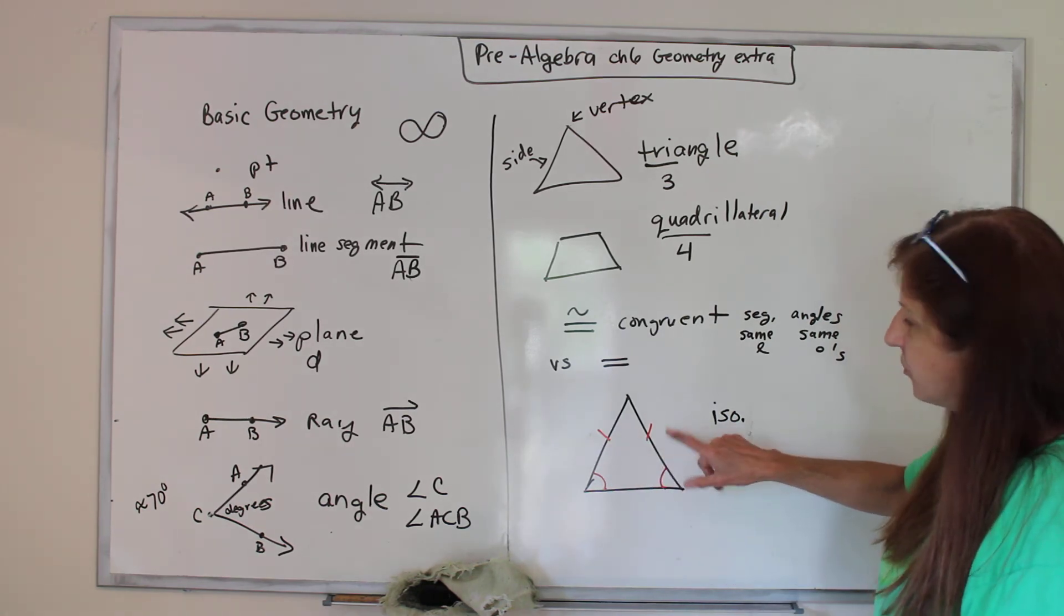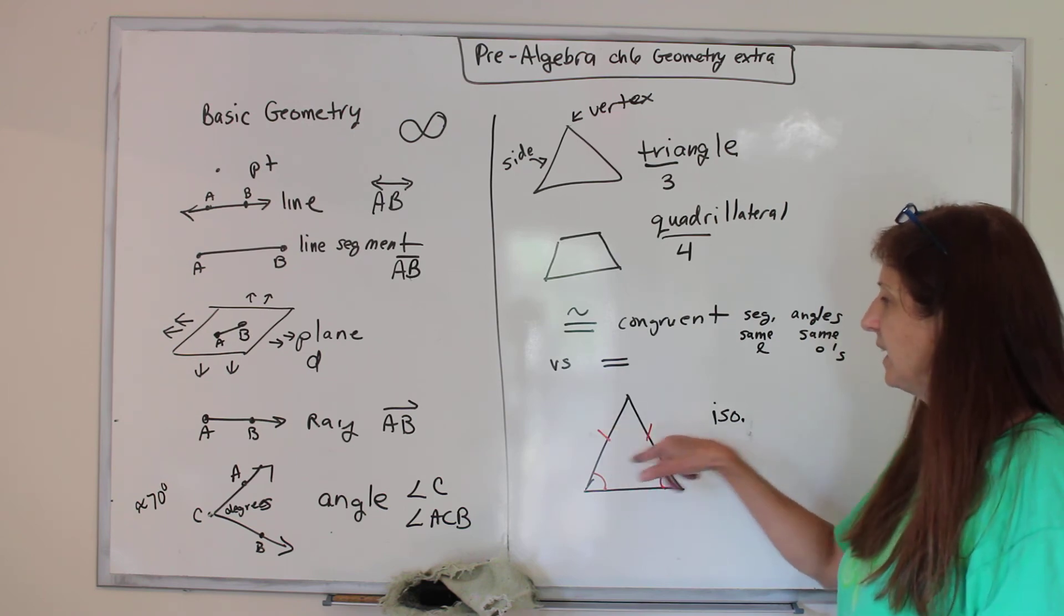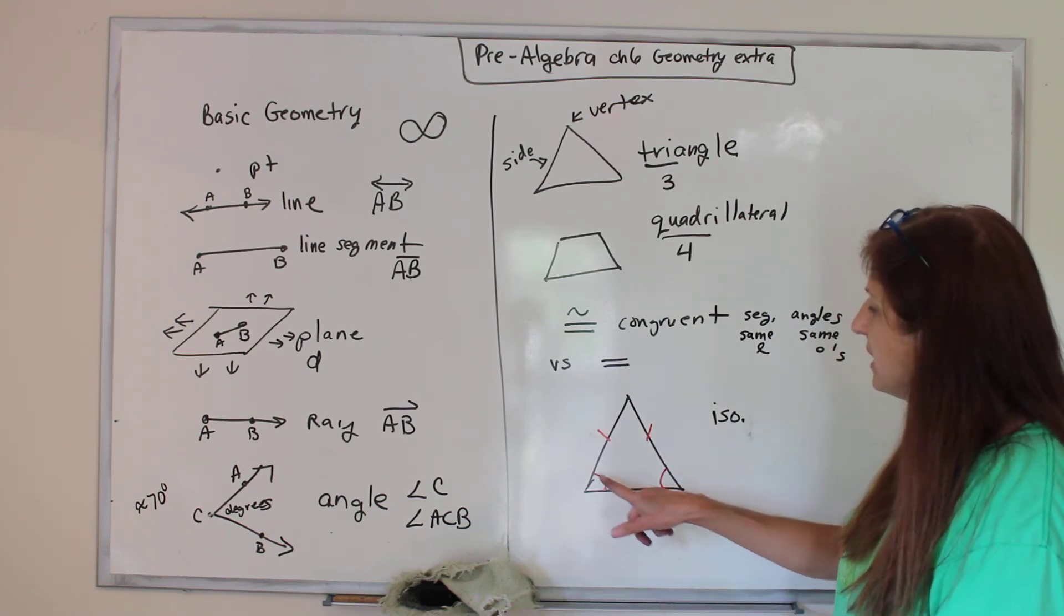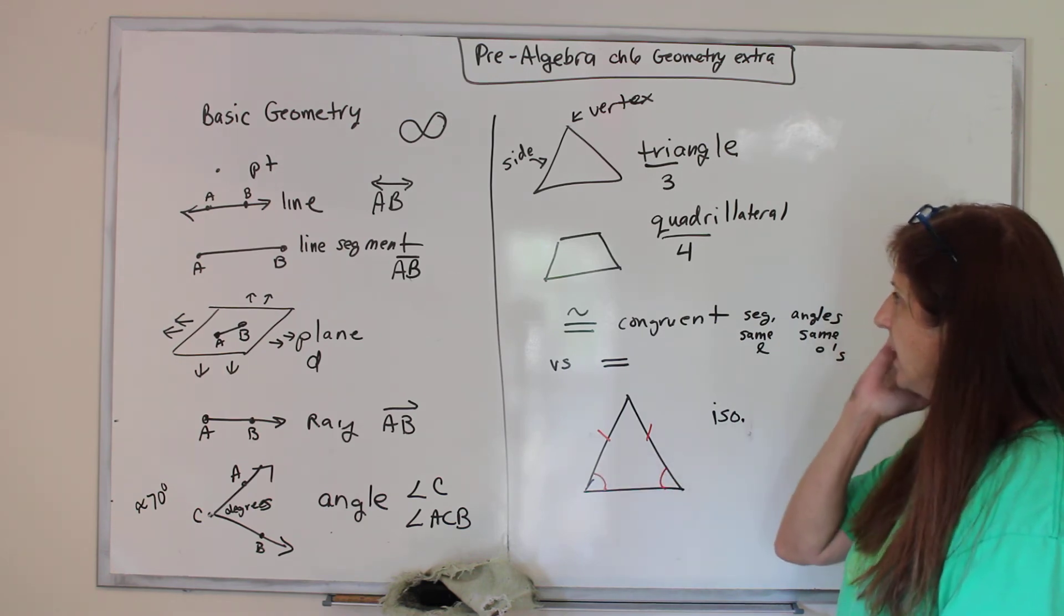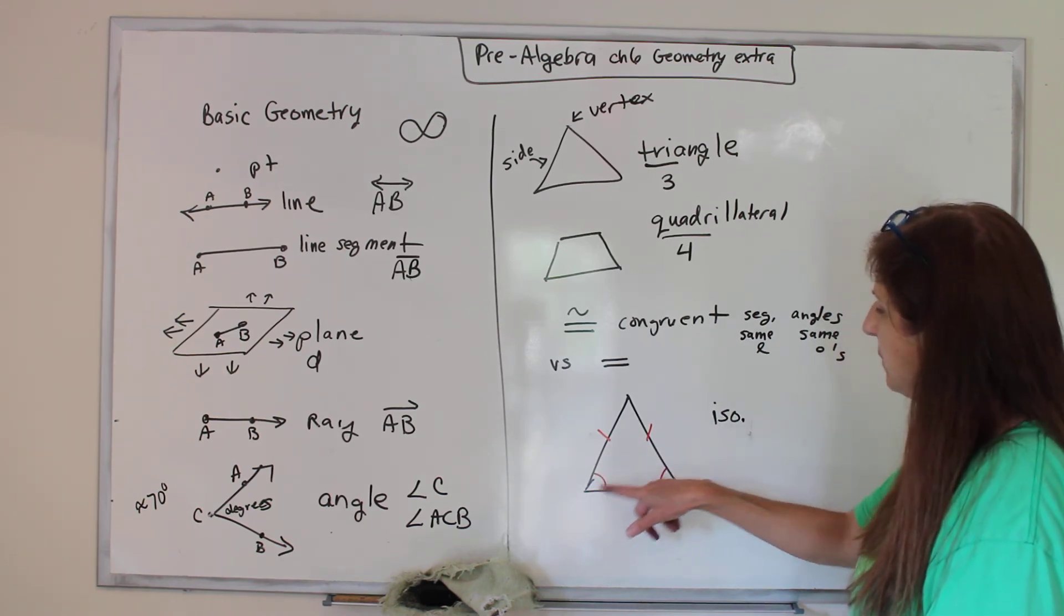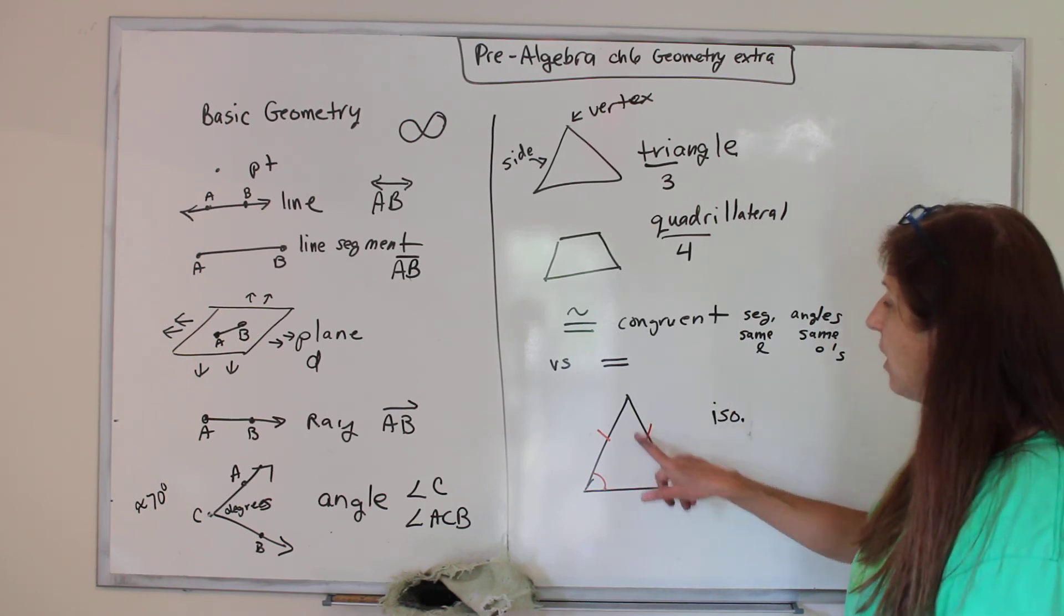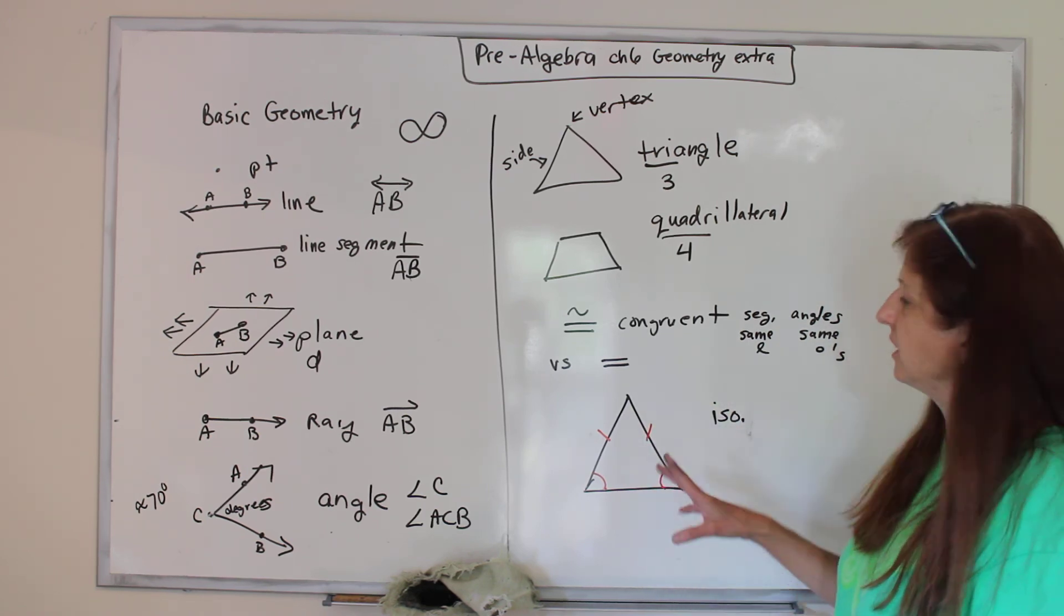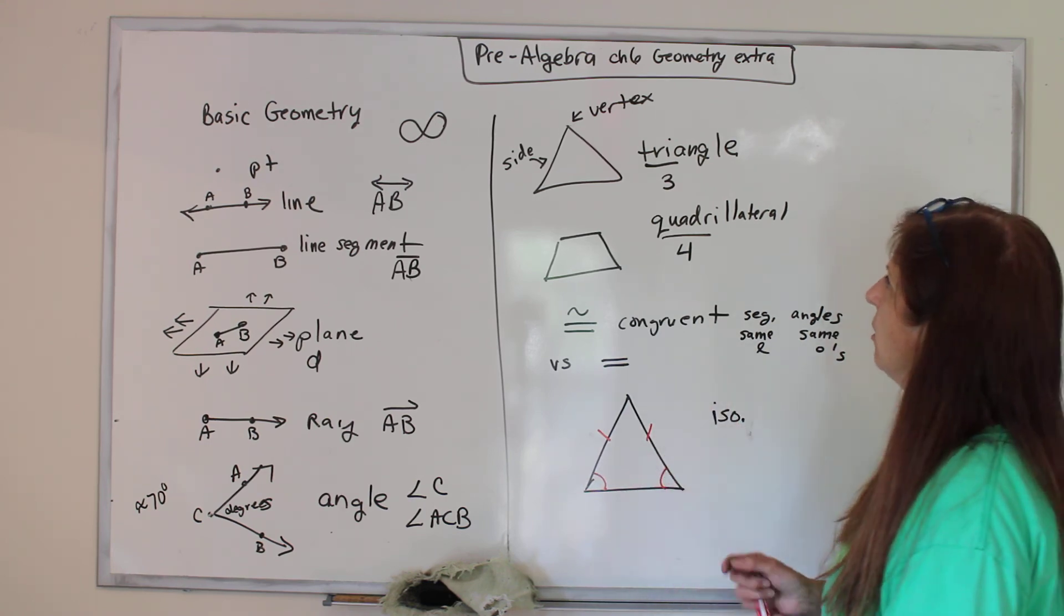Now here is a triangle. It's isosceles. You'll learn that I think next year, if not this year. But it's got certain things that are the same. This side equals that side. They're the same length. And how we show that is a red line on both sides. This angle equals that angle. How we show it is by a red swoosh, and that means those two are the same. Now this side and that angle are not the same with isosceles. With equilateral, all three of them are the same, or equal angular also.